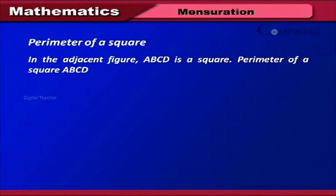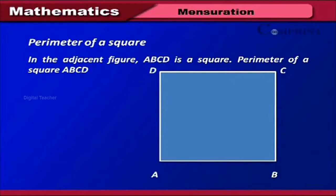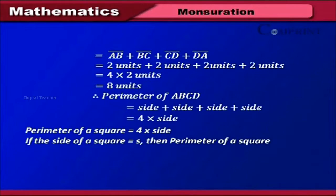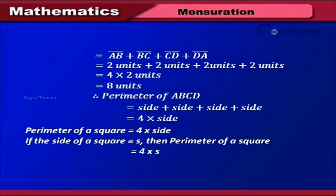Perimeter of a square. In the adjacent figure, ABCD is a square. The perimeter of square ABCD equals AB + BC + CD + DA, which equals 2 + 2 + 2 + 2 units, which equals 4 × 2 units = 8 units. In general, if the side of a square is S, then the perimeter of a square equals 4 × S.